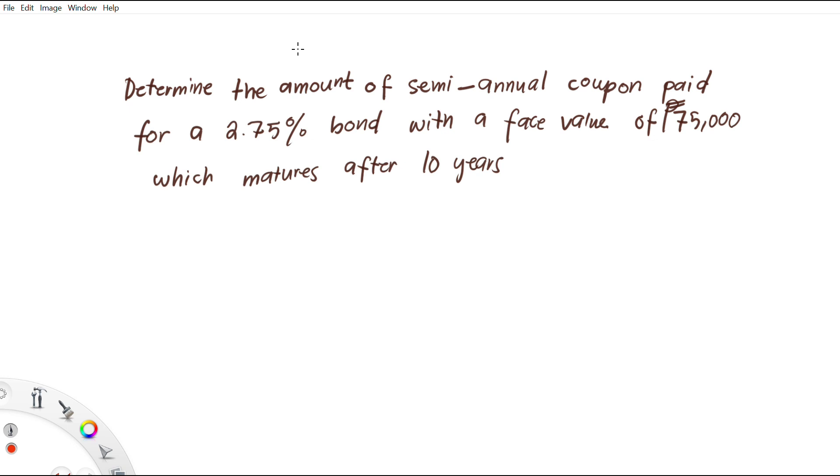We have this exercise: determine the amount of semi-annual coupon paid for a 2.75% bond with a face value of 75,000 pesos which matures after 10 years. Let us first write the given values. We have a face value of 75,000 pesos and a coupon rate of 2.75%.